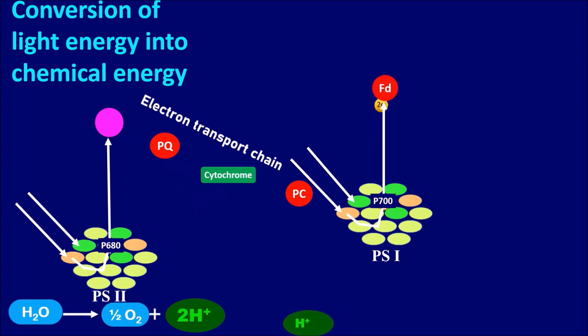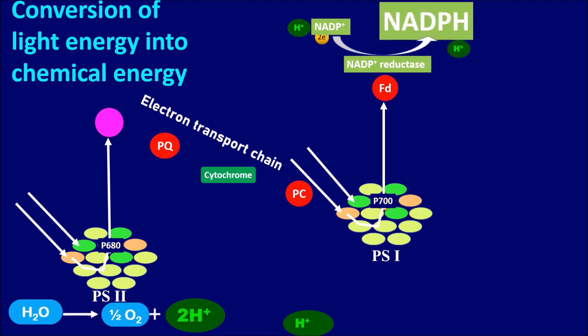Electrons which are excited by the PS1 will be received by ferredoxin, and in the presence of NADP reductase enzyme will be utilized to form NADPH which is considered as energy rich compound and utilized in the dark phase or Calvin cycle. The protons which are formed during the photolysis and during the electron transportation will be transferred through the ATP synthase complex, which results in combining inorganic phosphate with the adenosine diphosphate to form ATP, adenosine triphosphate which is again an energy rich compound.